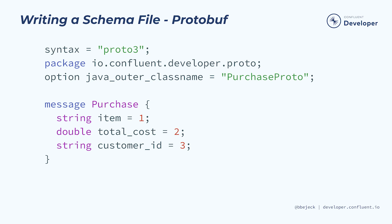The option java_outer_class_name field describes the name of the generated Java file. Protocol buffers define the records as a message, and within that, we can specify the fields and their types. We'll go into more detail on how protobuf works in the next module.